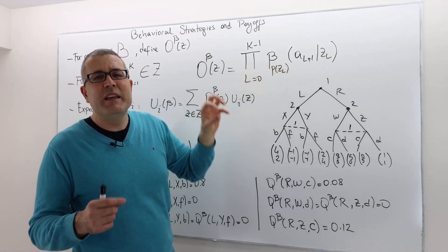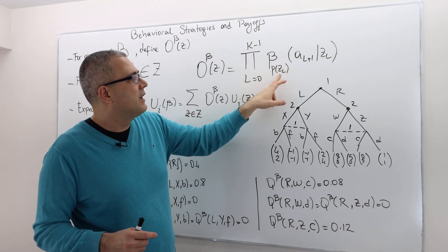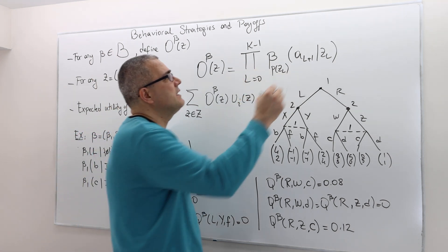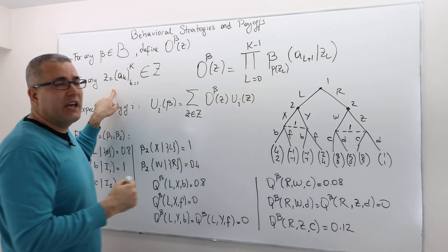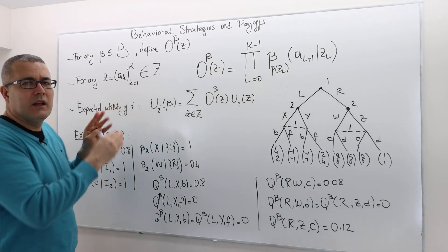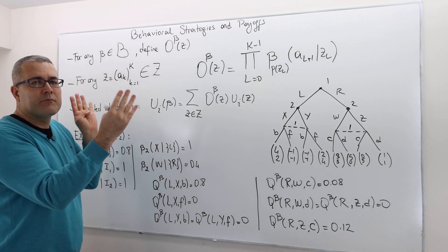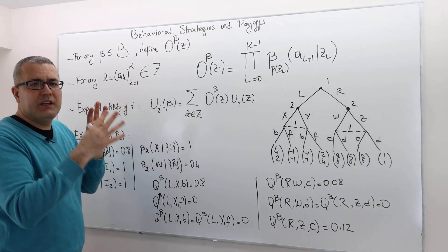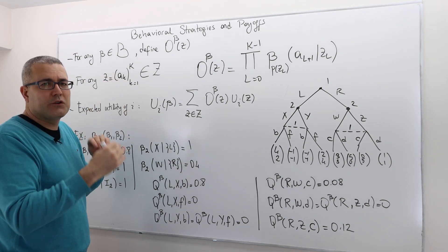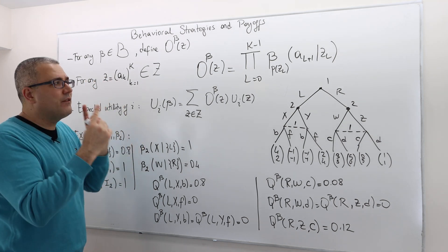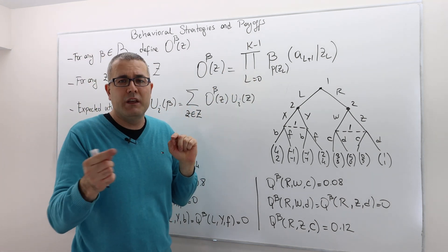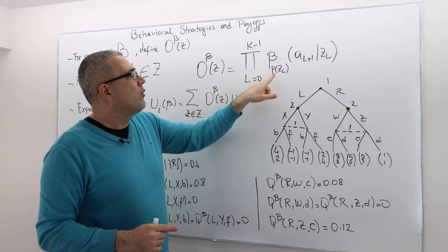This is the mixed strategy of player ZL, the player who moves after history ZL. ZL is the truncation of this history Z, meaning just look at the first L period of this history, ignore the remaining k minus L actions. This subhistory is Z sub L.